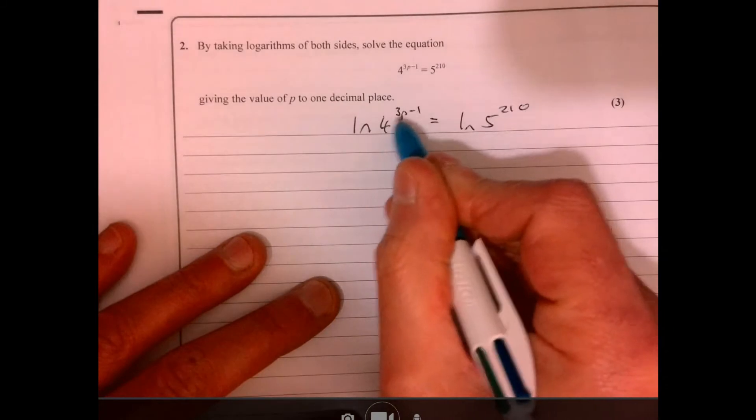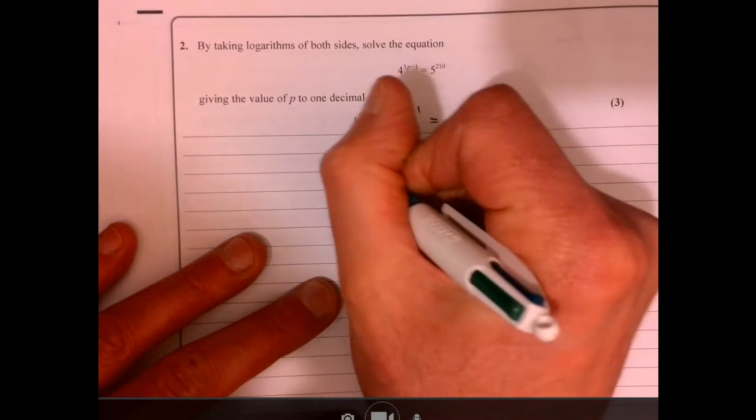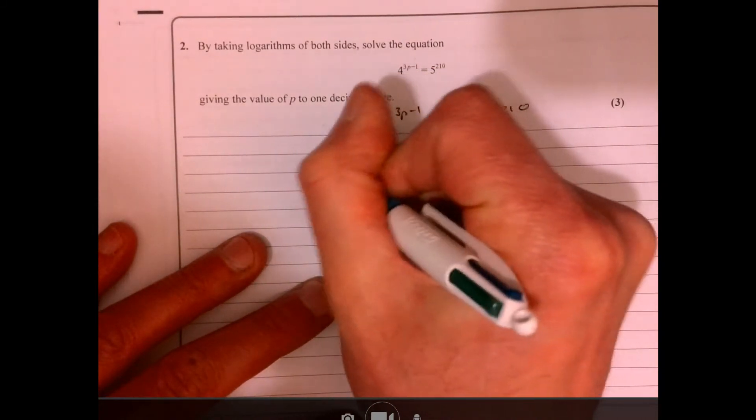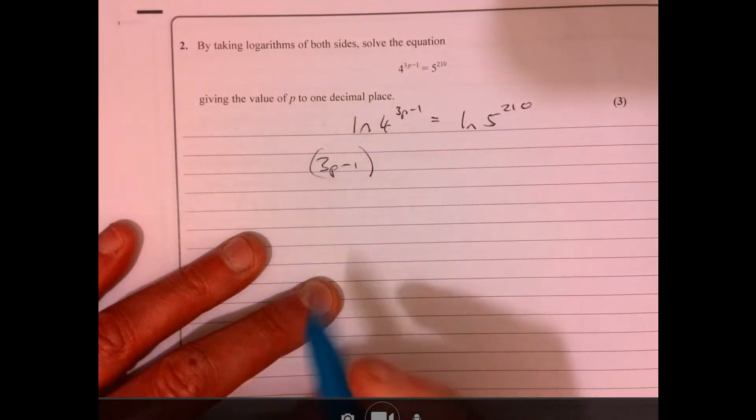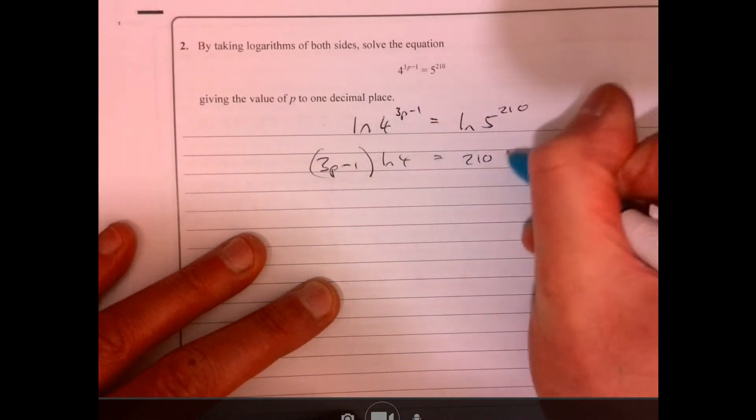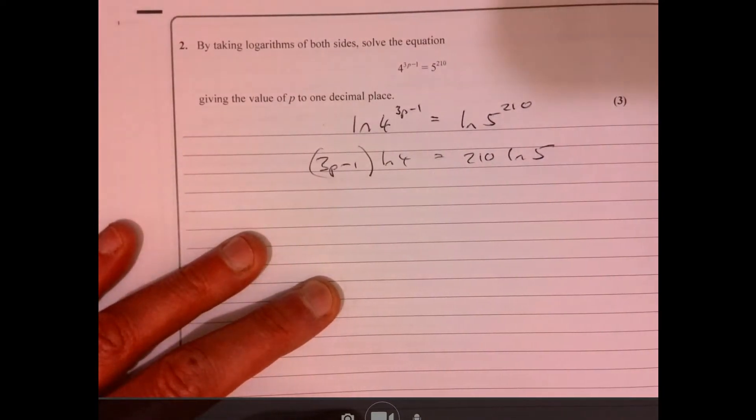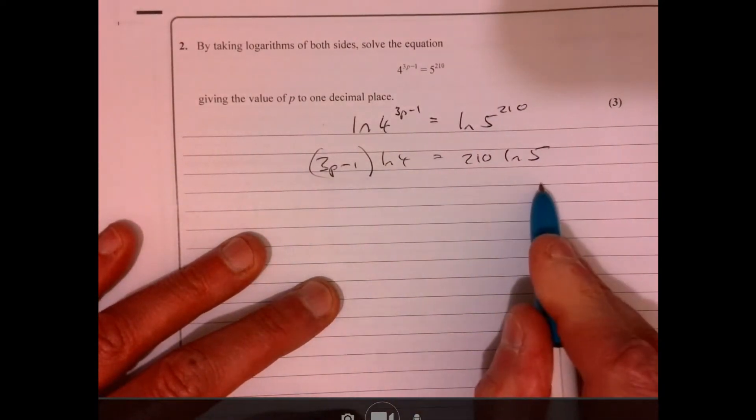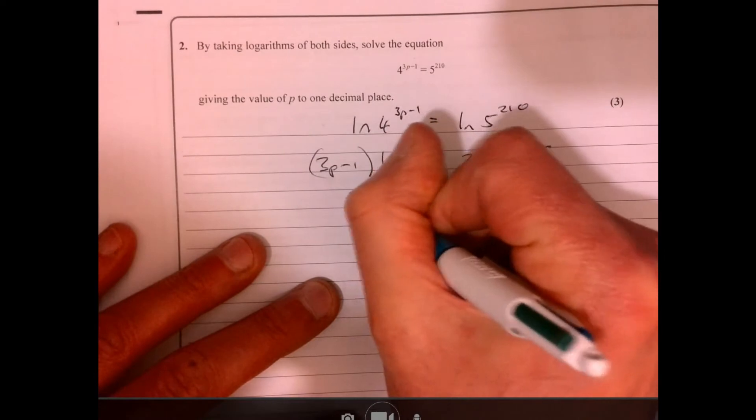So using your log laws, we can—I've got the power here so I can bring that out the front—so 3p minus 1, remember that's all together, ln 4 equals 210. ln 5. Divide both sides by ln 4.